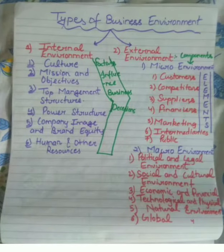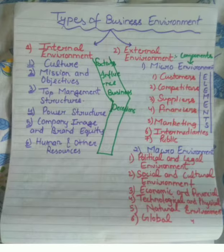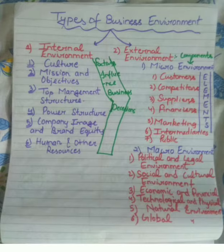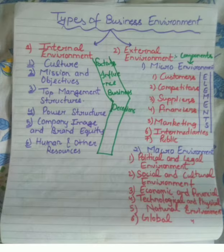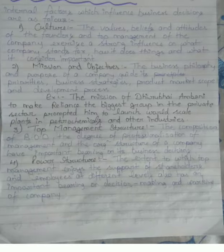Now we have studied the internal environment — the internal effects of the culture, the values and beliefs, the mission, the top management and top-down approach, the power structure decisions, the image of the company, the human and other resource, and development. We will discuss the external environment further in the next video.